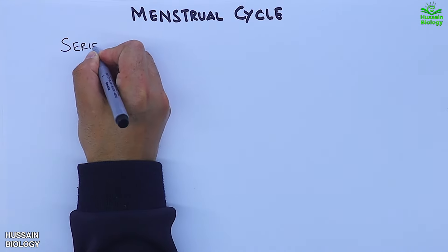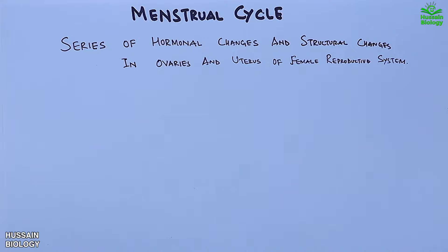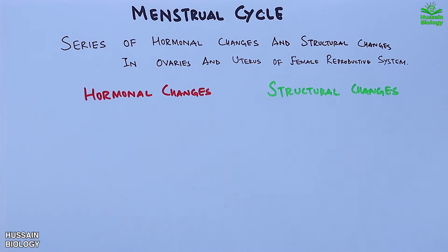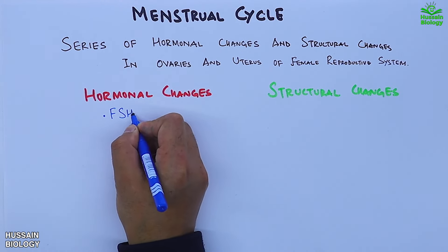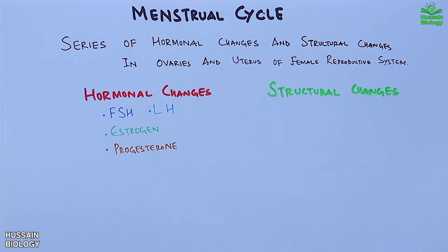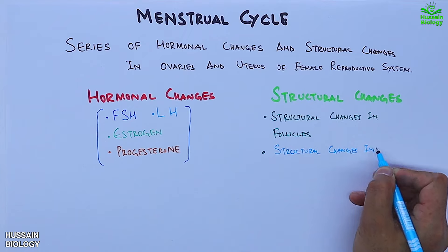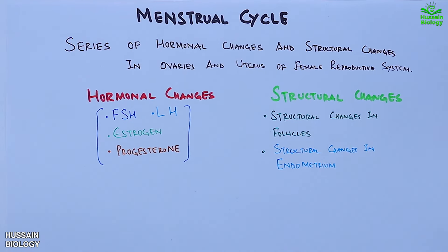The menstrual cycle includes a series of hormonal changes and structural changes in the ovaries and uterus of the female reproductive system. The hormonal changes include changes in FSH, LH, estrogen, and progesterone. The structural changes include changes in follicles and changes in endometrium tissue.